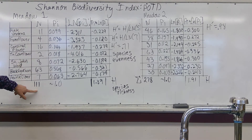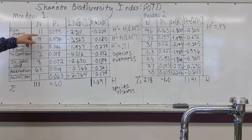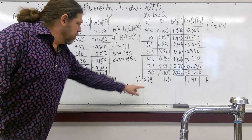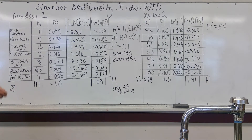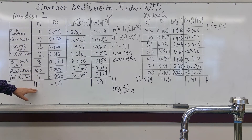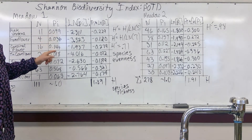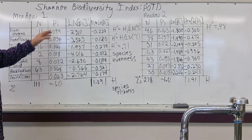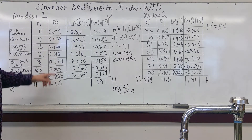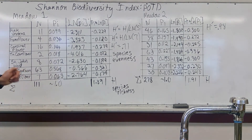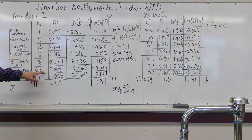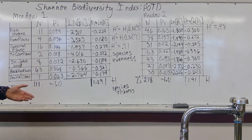First, we'll do species richness, which goes through the following steps. We sum up all the individuals across all species in each meadow—sigma being the mathematical symbol for sum. Then we get the proportional amounts: take each individual count, divide by the total, and we get our proportions. If we multiplied by 100, they would be percents; since we're not, they should add up to roughly one. Not surprisingly, the largest proportions are assigned to the populations with the biggest numbers.